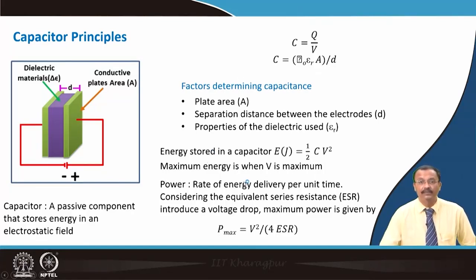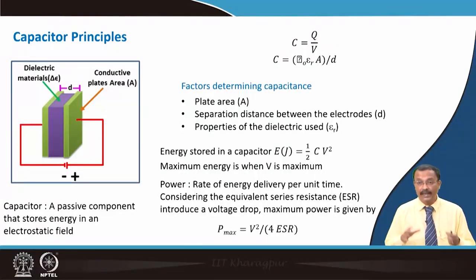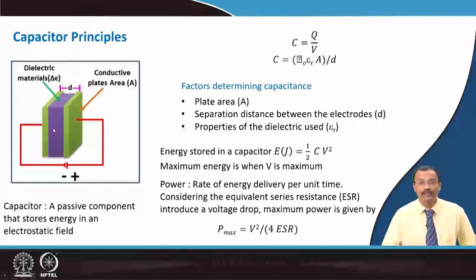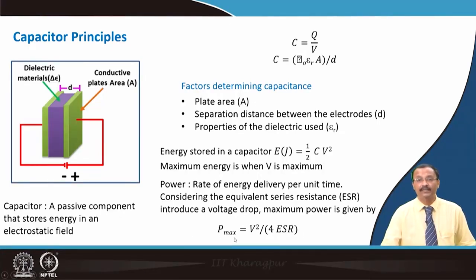Energy stored in the capacitor is estimated from the relation ½CV². Maximum energy is when the applied voltage V is maximum. Power is the rate of energy delivered per unit time. The equivalent series resistance (ESR) introduces a voltage drop from the electrode plate, capacitor material, connecting wires, and all series resistances. Maximum power is given by P_max = V²/(4·ESR).